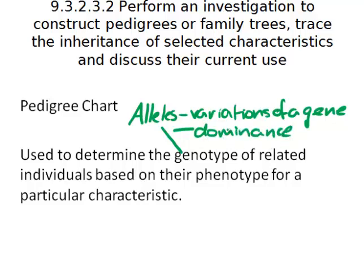For each trait there will be a dominant allele which will mask the recessive allele, showing dominance. For a specific gene, each organism has two alternatives, carried on the homologous chromosomes — one chromosome from the father and one from the mother — and these are given to the individual at fertilization.